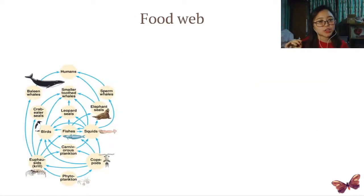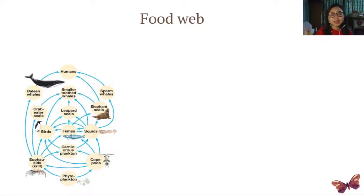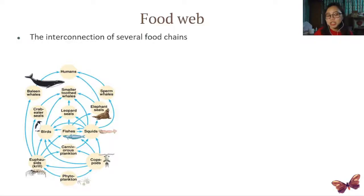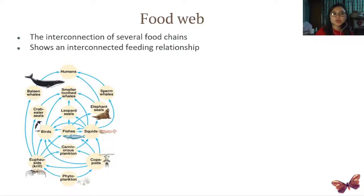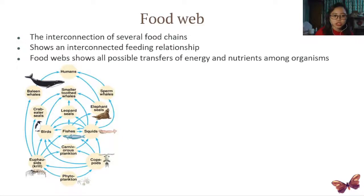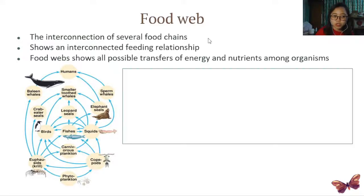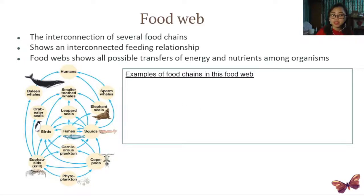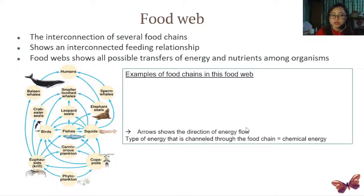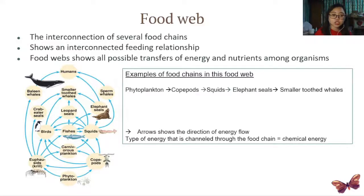Food chains are not the only way to look at the interactions between organisms — we can also use food webs. A food web is the interconnection of several food chains and it shows an interconnected feeding relationship. In food webs, it shows all possible transfers of energy and nutrients among organisms. From one food web, we can extract many food chains. The arrows show the direction of energy flow, and the type of energy channeled through the food chain is chemical energy only.